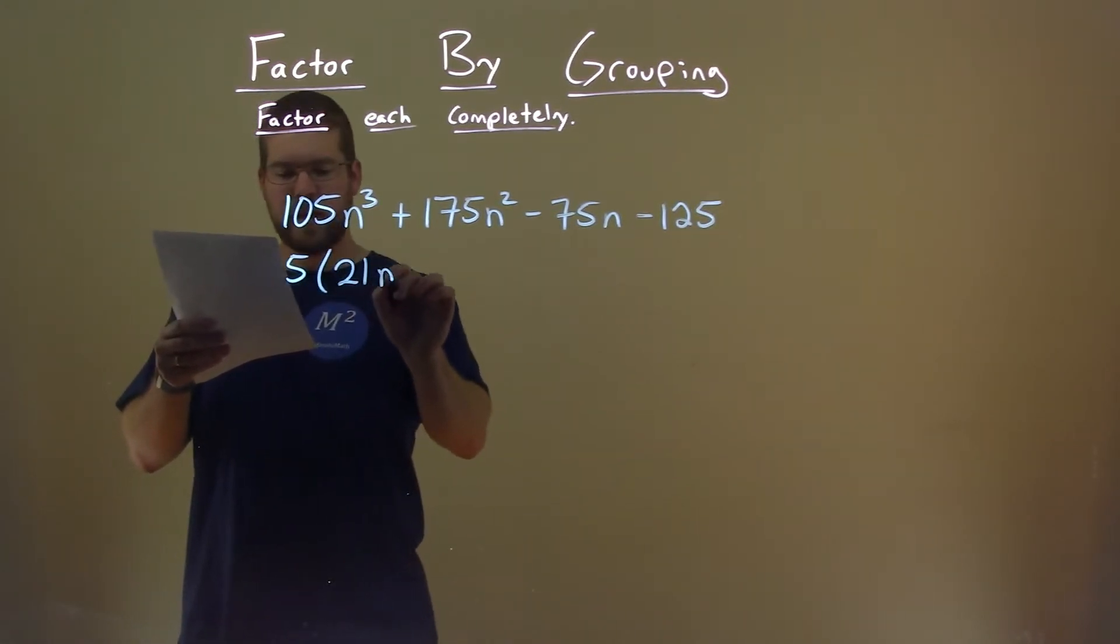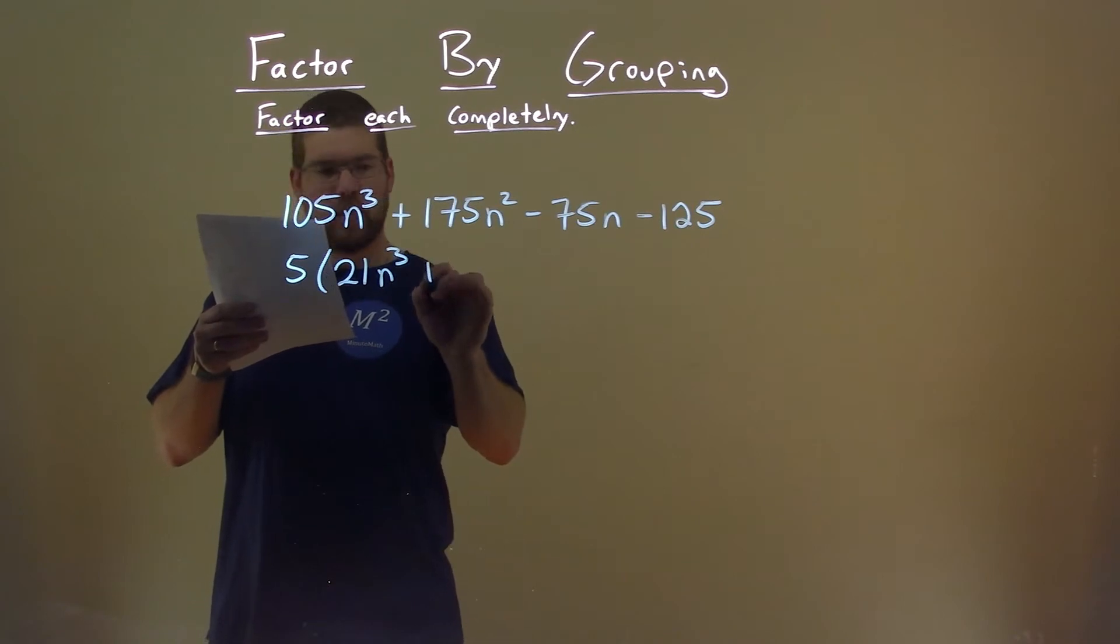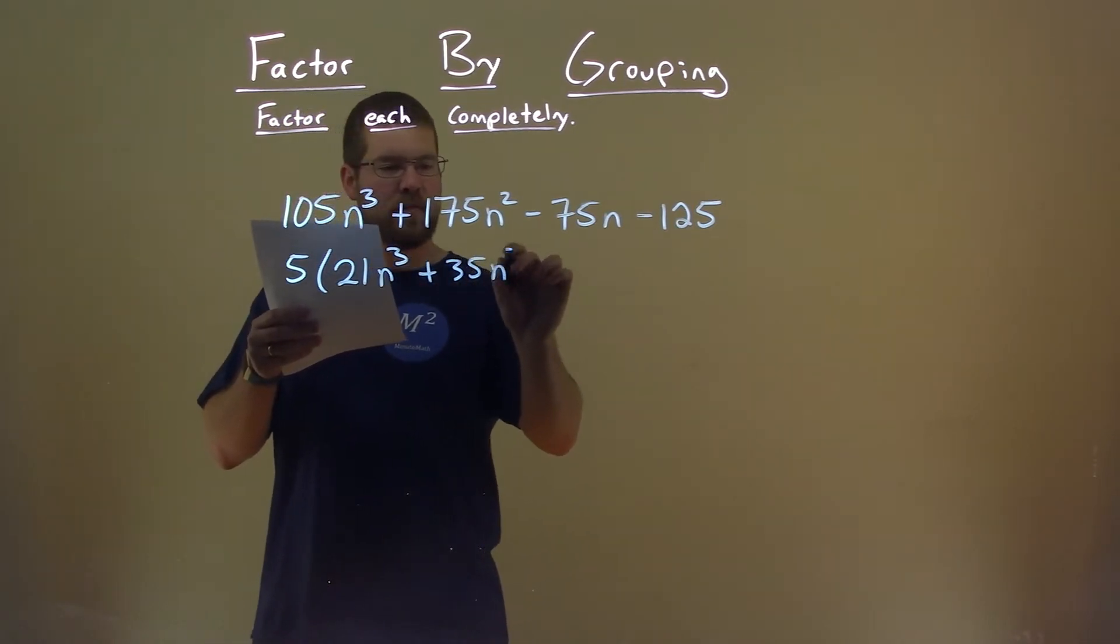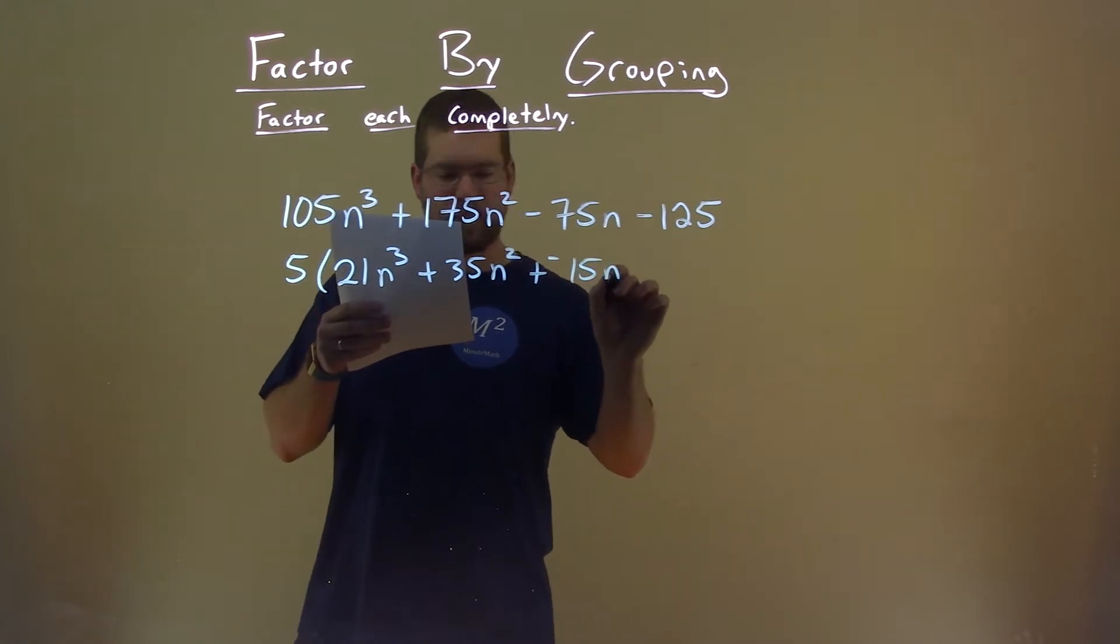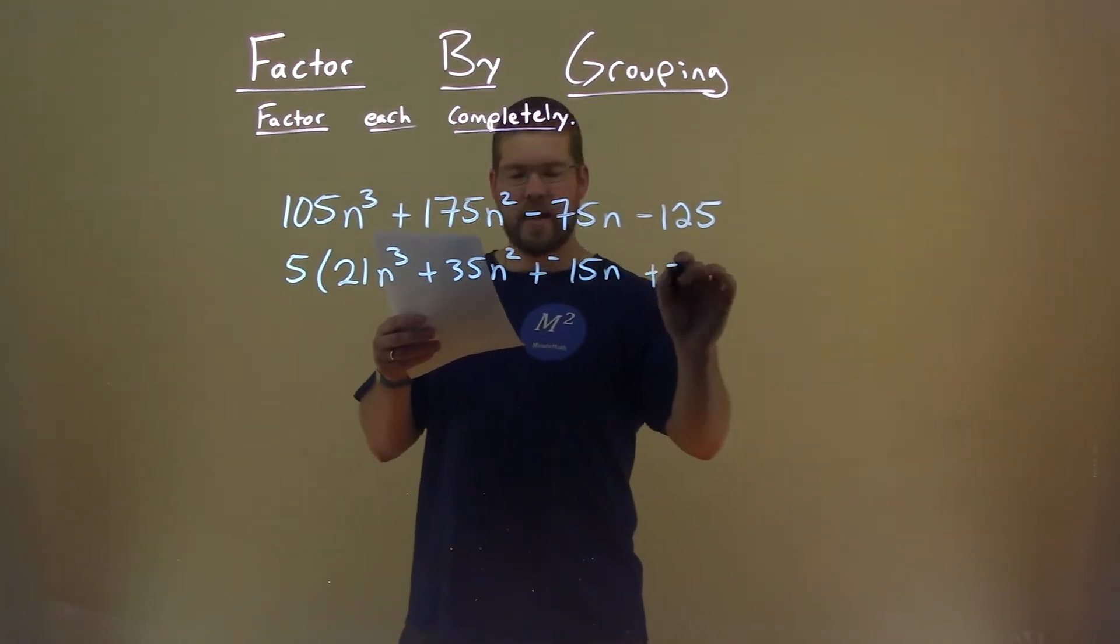Well, we're left with 21n³ plus 35n². I'm going to write it as plus a negative 15n, and then plus a negative 25.